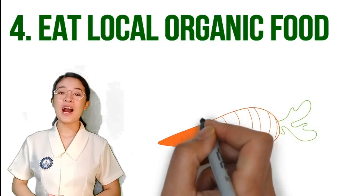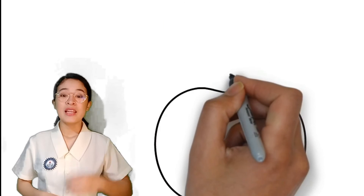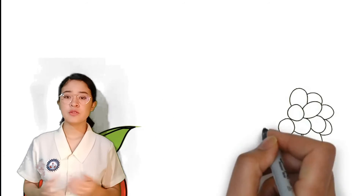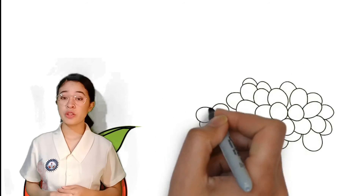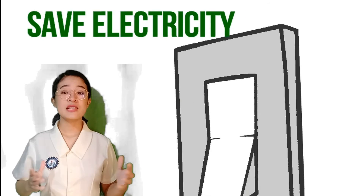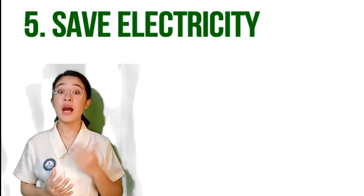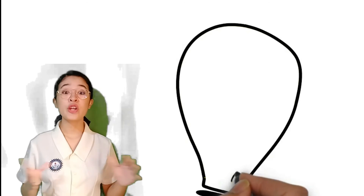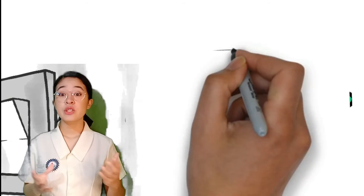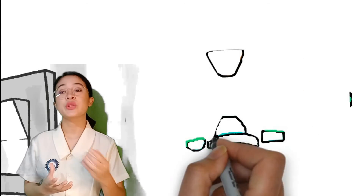Fourth, eat local organic food. Eat things that are made locally, like vegetables and fruits. That means they don't have to be transported as far to get to you. And lastly, save electricity. Don't keep the lights or other electric devices on unnecessarily. The more traditional power you are using, the more energy you are wasting, and the more you are polluting the air.